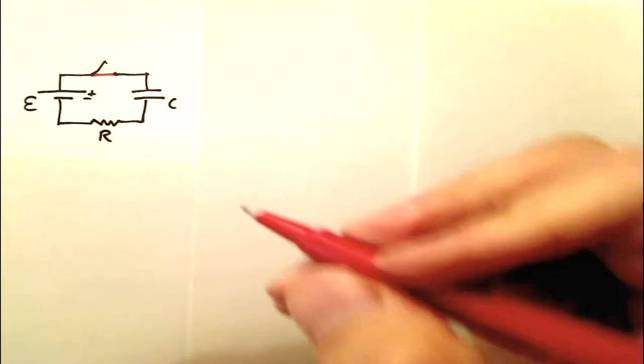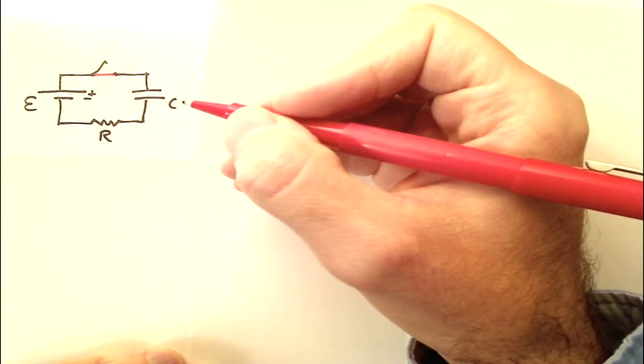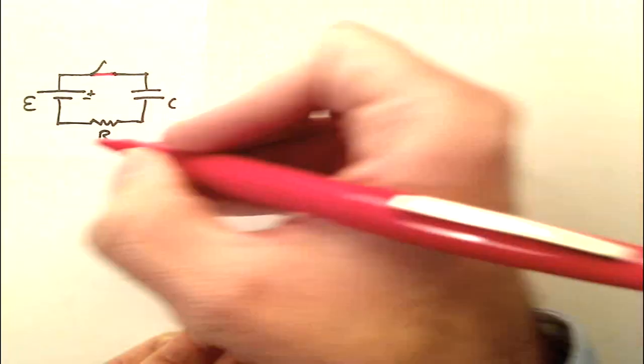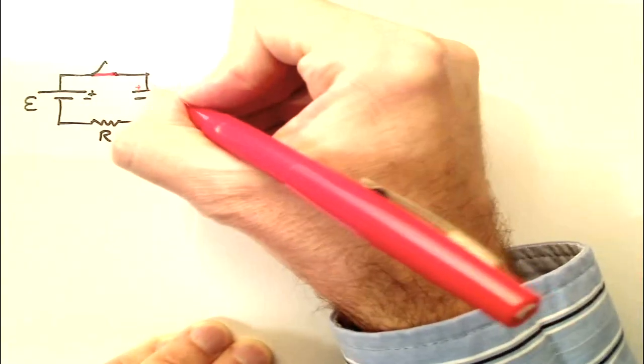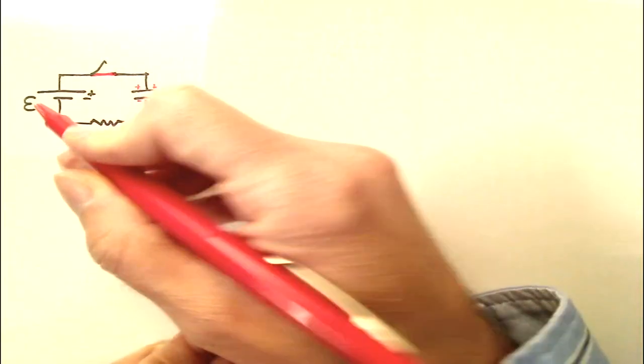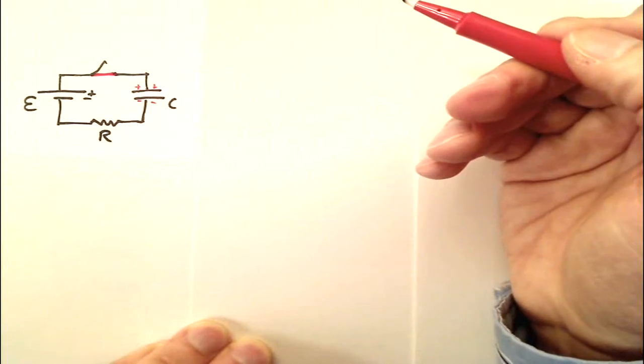Let's close that switch. Closing the switch allows current to start to flow around through the circuit. As current flows, charge will begin to build up on this capacitor, and eventually the voltage on the capacitor will be equal to the EMF, at which point the current will stop flowing.